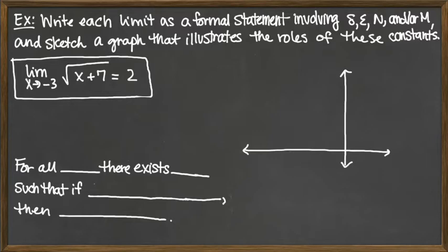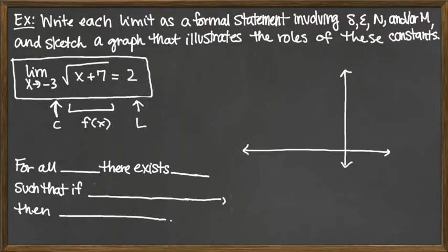For this first example, we have the limit as x goes to negative 3 of the square root of x plus 7 equals 2. Noting that negative 3 here is our c value, the square root of x plus 7 is our function, and 2 is our limit value L. We have a finite c and a finite L, so this is going to be the standard epsilon-delta definition for the formal statement.